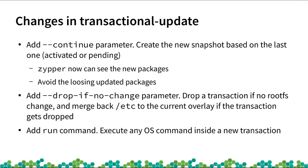To start the integration, we made some changes in the transactional-update command line tool. We added a --continue parameter to create new snapshots based on the last one — that can be the active one or the one that is still pending. We added a --drop-if-no-change parameter that will drop a transaction if there is no change in the root file system, and we merge back slash etc to the current overlay if the transaction gets dropped. We also added the run command to execute any command inside a new transaction. Together with both previous parameters, we can execute, for example, the Salt minion inside a new transaction based on the last one, that will be dropped if there is no change in the system.